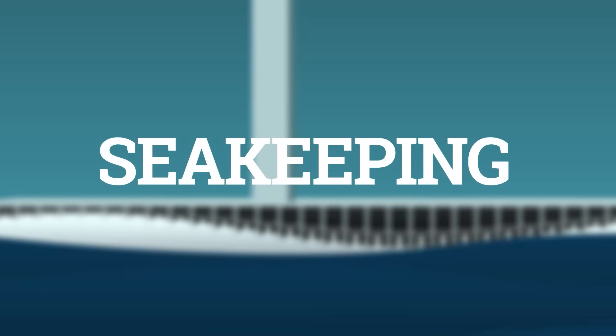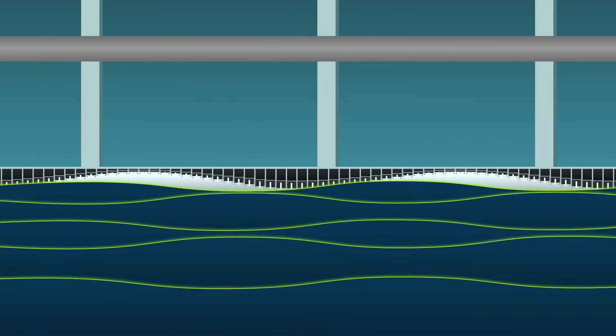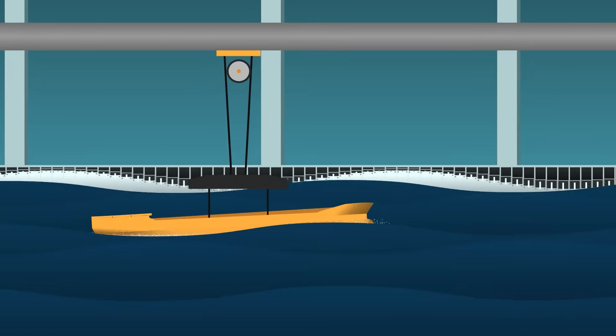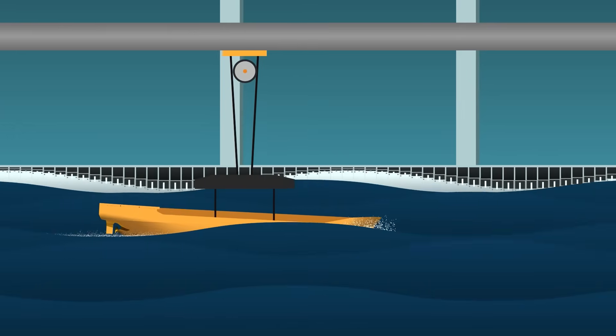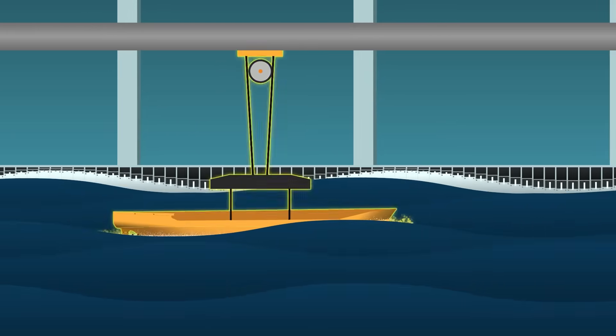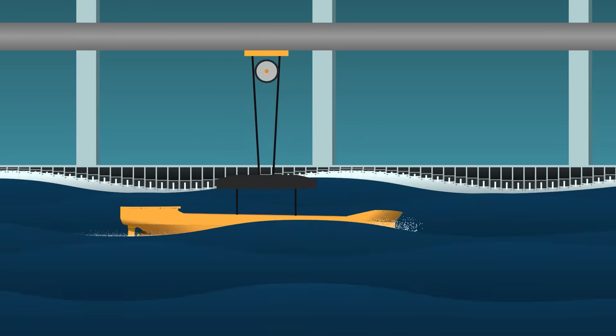Seakeeping comes next. In a wave basin, artificial storms are created. Waves from every direction. Long rolling swells, steep waves crashing head on, and chaotic seas hitting from the side. The model moves through it all, its motion tracked in six degrees of freedom.